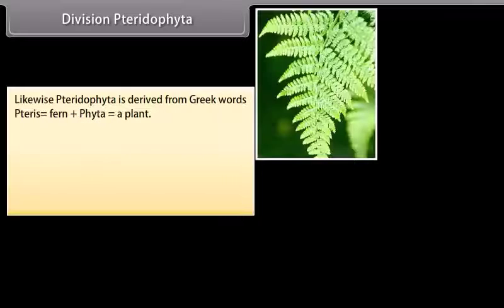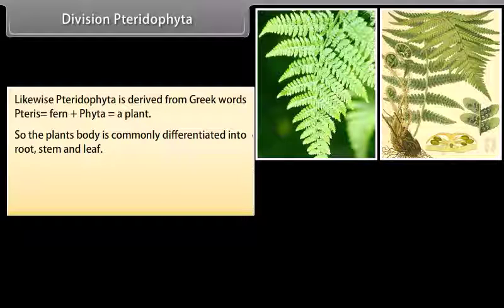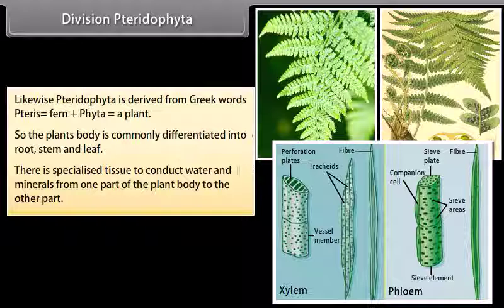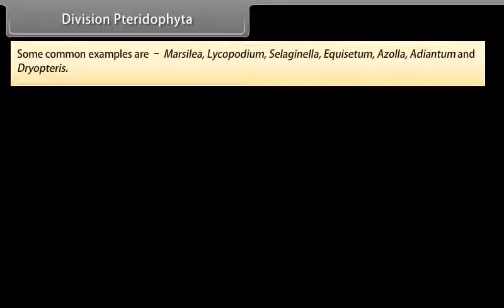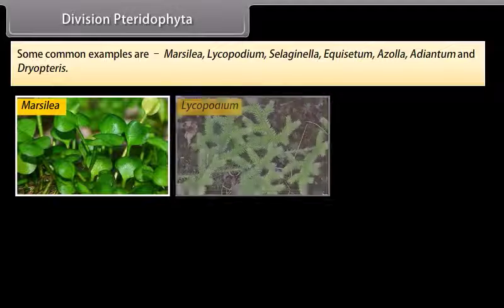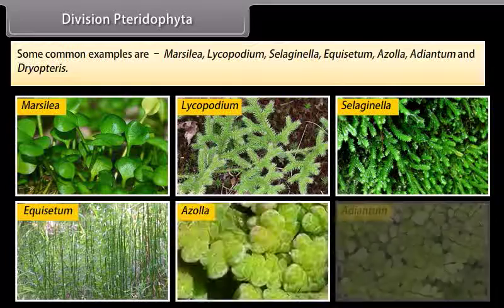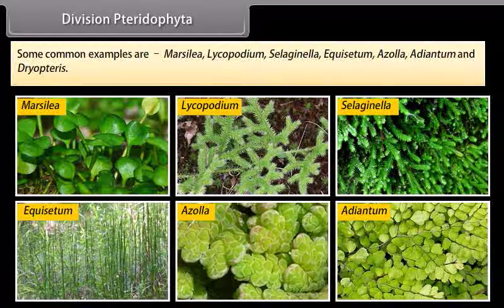Pteridophyta is derived from Greek words: pteron, meaning fern, plus phyta, meaning a plant. The plant's body is differentiated into root, stem, and leaf. There is specialized tissue to conduct water and minerals from one part of the plant body to another. Some common examples are Marsilea, Lycopodium, Selaginella, Equisetum, Azolla, Adiantum, and Dryopteris.